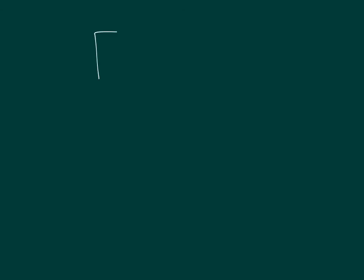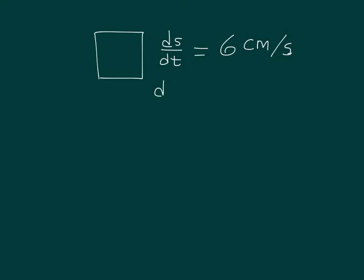We're given that each side of a square is increasing at a rate of six centimeters per second, so the change in the side over the change in time is 6. We want to find at what rate the area of the square is increasing — the change in area over the change in time — when the area is 16 square centimeters.